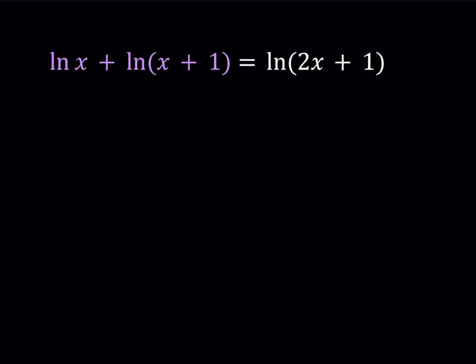One of the things that I'd like you to notice about this equation is that if you add x and x plus 1, you get 2x plus 1. So this equation is kind of of the form ln a plus ln b is equal to ln a plus b. But is this an identity for logarithms? It is not. It's not always true, it's sometimes true.